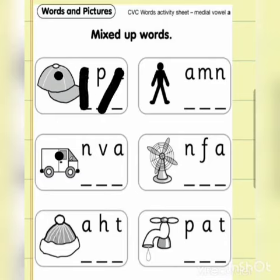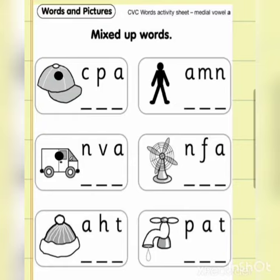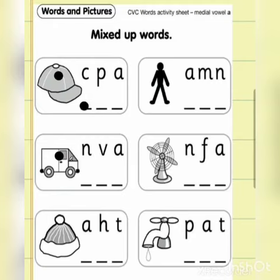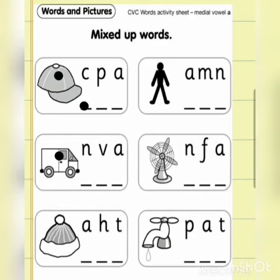CVC words mean consonant-vowel-consonant — the first letter is a consonant, then a vowel, then again a consonant. For example: C-A-P = cap, V-A-N = van, H-A-T = hat, M-A-N = man, F-A-N = fan, T-A-P = tap. This is the way you have to write the words in the correct order.